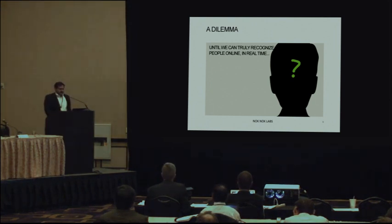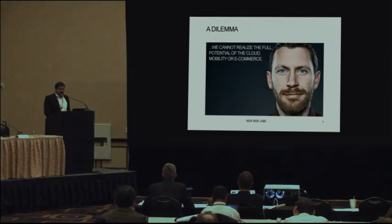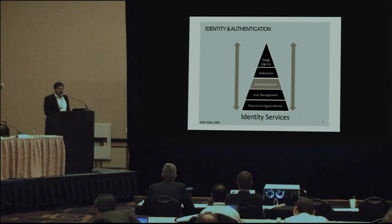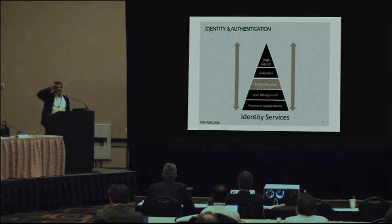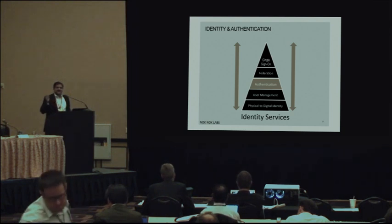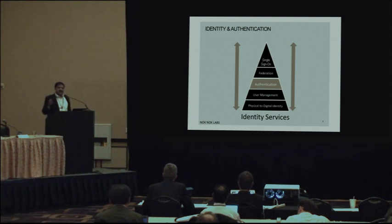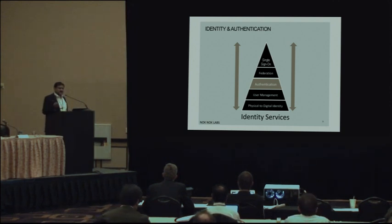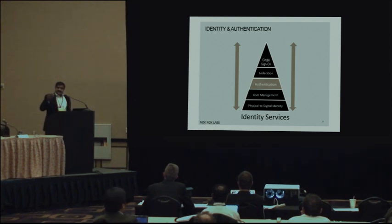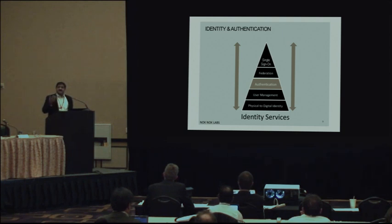Everybody understands that until you can recognize people and devices in real time, we are simply compensating and introducing friction, unable to realize the full potential of these infrastructures we are building. When I talk about authentication, people get confused about authentication versus identity versus federation, so I find it useful to refer to a diagram. The base of the pyramid is how do you map something physical into a digital record? How do you manage something at scale for user or device identities? Then there's a real-time claim, the federation problem, and single sign-on.